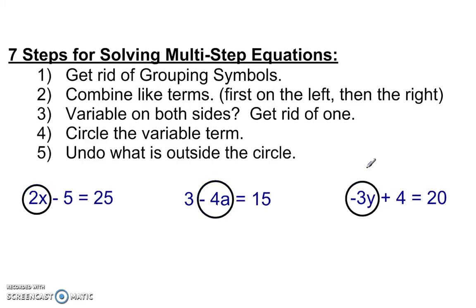Next step, we want to undo or eliminate what's outside the circle. I call this a safety circle, because when the eliminator comes, then he only eliminates what's outside. So he comes with his inverse tool, plus 5, because this is a negative 5, plus 5, eliminated that 5. Everything inside the circle was safe. 2x is equal to 30.